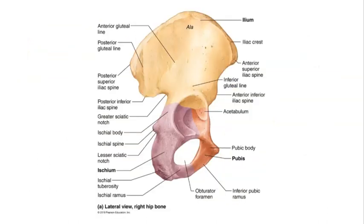Looking at a coxal bone or a hip bone from the lateral side, we see that each of the large and irregularly shaped coxal bones consists of three regions. We have the ilium, which forms the superior aspect of each coxal or hip bone. The ischium, highlighted in purple, forms the inferior and posterior aspect of each coxal bone. And then finally we have the pubis, highlighted in red, which forms the inferior and anterior portion of the coxal bone.